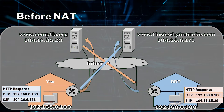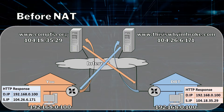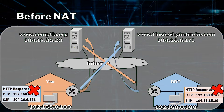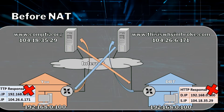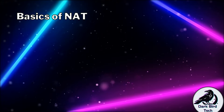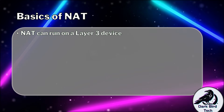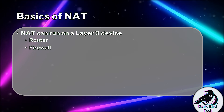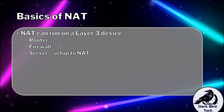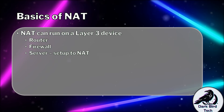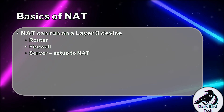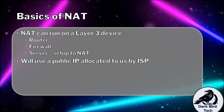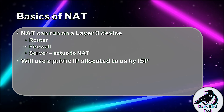I think at least one of us is going to be very confused about the response that we get — this is obviously not what we want. So let's check out what NAT is going to do for us. NAT is able to run on any Layer 3 device, whether it be a router, a firewall, or a server that we set up to do NAT translation. And what it'll do is take a public IP address that we get through our ISP and translate for us.